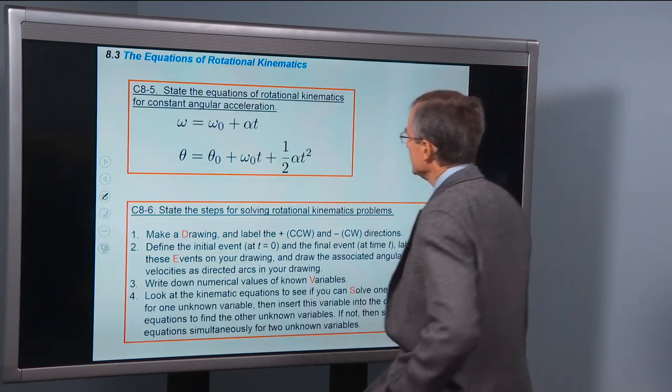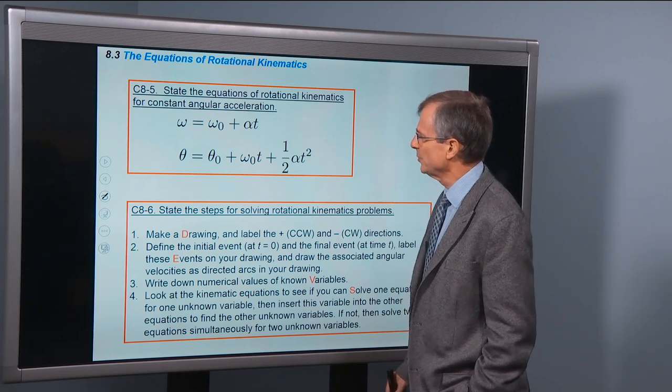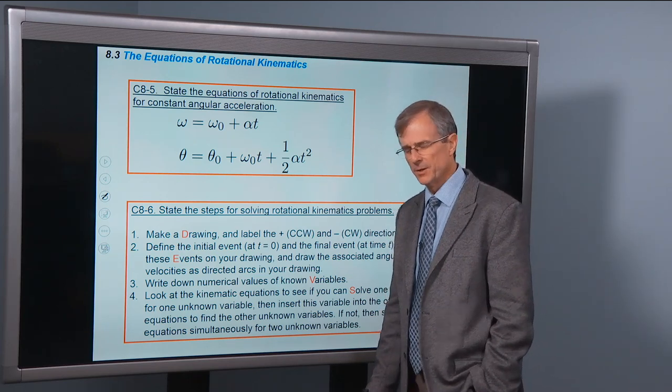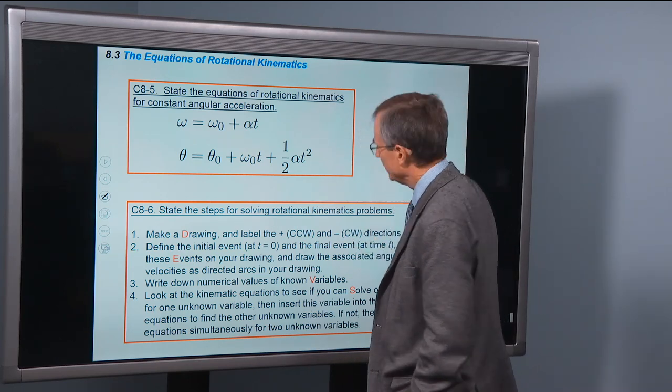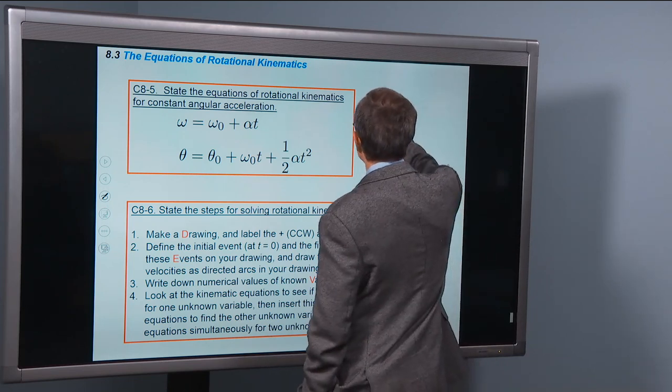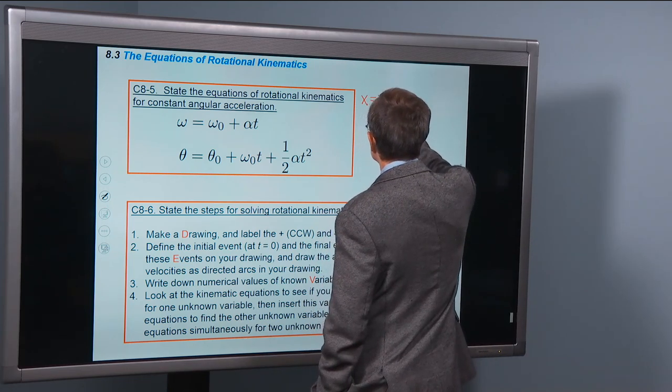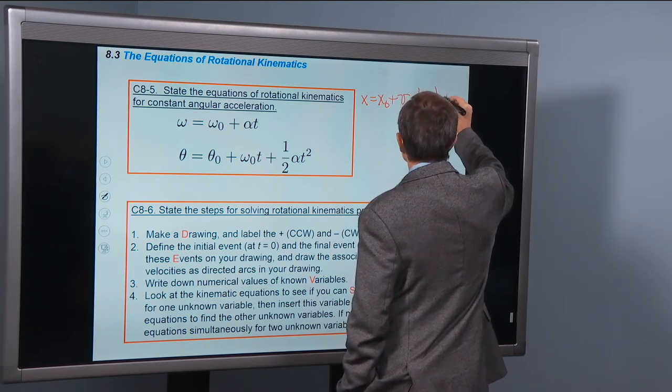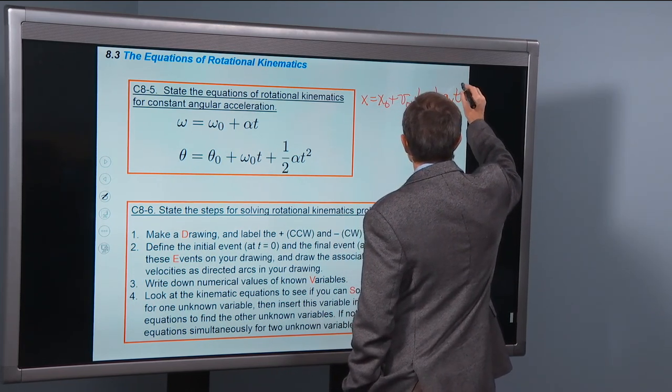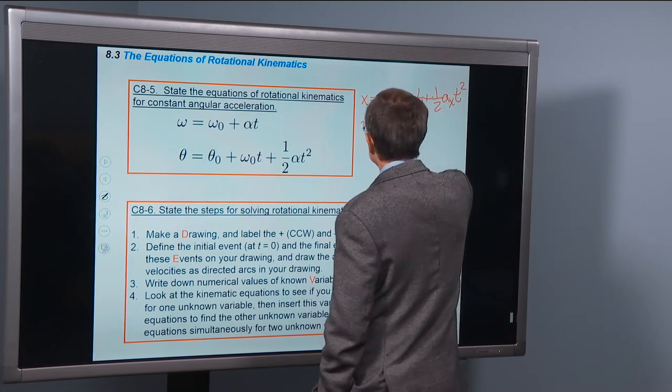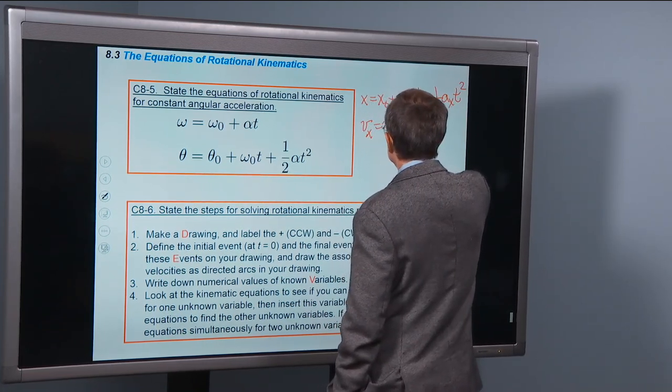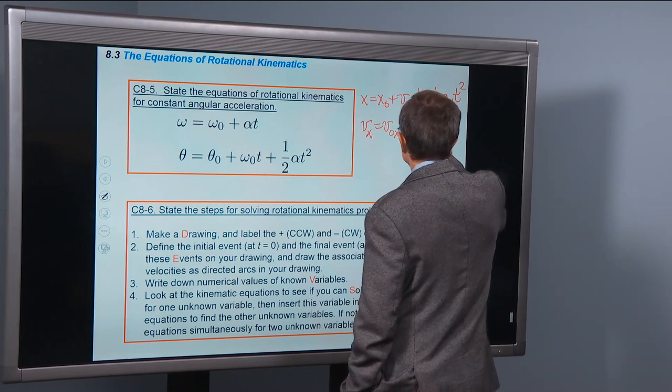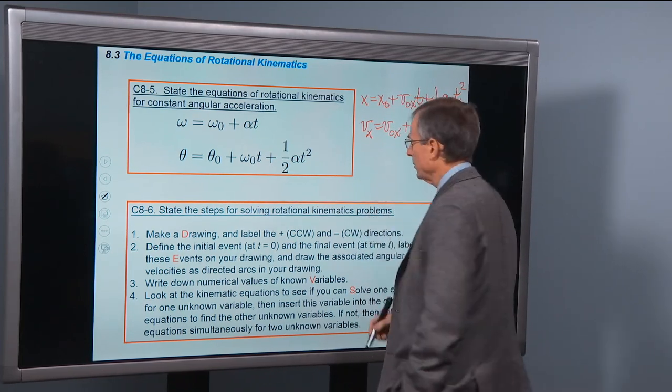So let's write down the equations of rotational kinematics for constant angular acceleration. If you remember, we had an x equation: x = x0 + v0x*t + (1/2)*ax*t^2, and we have vx = v0x + ax*t, and similar equations for y.